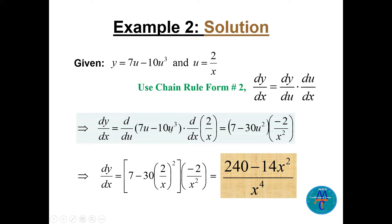dy/du = 7 − 30u². Then du/dx: since u = 2/x, du/dx = −2/x². Substituting u = 2/x gives 7 − 30(2/x)² = 7 − 120/x². Multiplying by −2/x² and simplifying with a common denominator gives the final answer: dy/dx = (240 − 14x²) / x⁴.